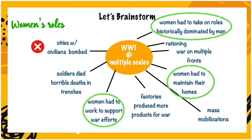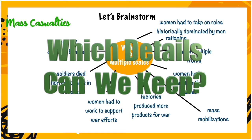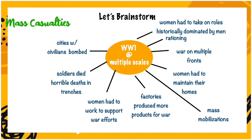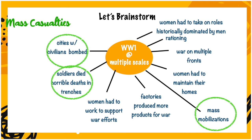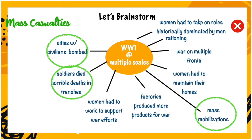If we're writing a paragraph about women, which details would we need to eliminate? We want to eliminate information that doesn't support our topic of women's roles. Cities with civilians being bombed doesn't really tell us what women were doing. War on multiple fronts doesn't really support women's roles either. Now let's look at another example — our topic is mass casualties. Which information supports that? Cities with civilians bombed, soldiers dying horrible deaths in trenches, and mass mobilizations. We would eliminate details about women's roles, and you want to make sure you narrow your focus to what's related to the topic.